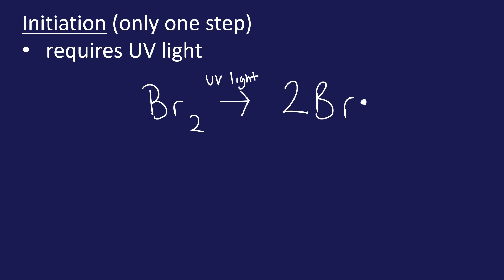And UV light is needed. So we often write UV light above this arrow. UV light is needed to break that bond in the bromine. So what's actually happening here is that UV light is providing the energy for this bond to undergo homolytic fission. So that's what's actually happening. But we need to be aware of that equation. Br2 goes to 2 Br dot. Now, if this was halogenation using chlorine, then all we'd simply do is have Cl2 going to 2 Cl dot.